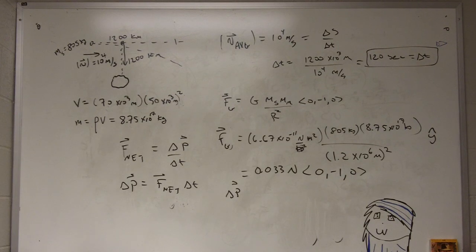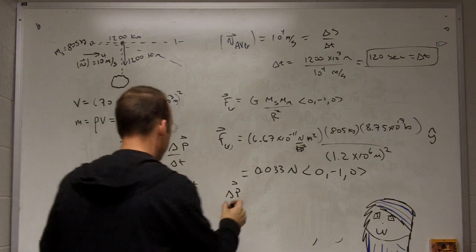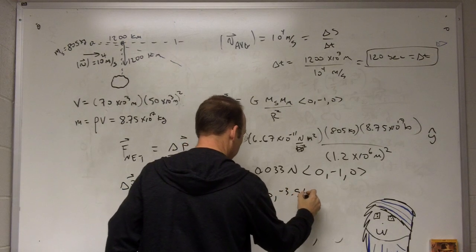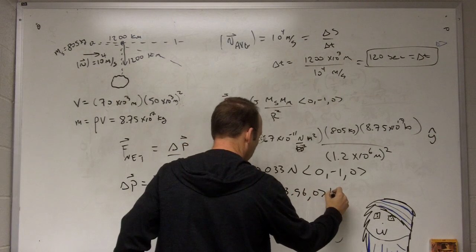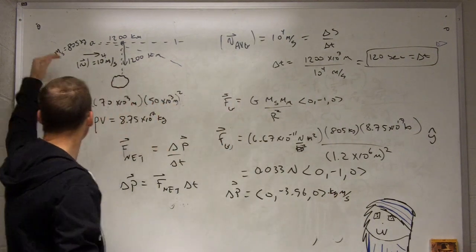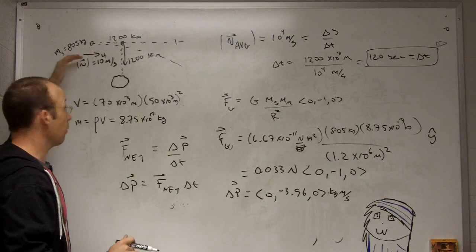3.96, so I get 3.96. So ΔP is going to be (0, -3.96, 0) kilogram meters per second. So that's my change in momentum as it passes by here.